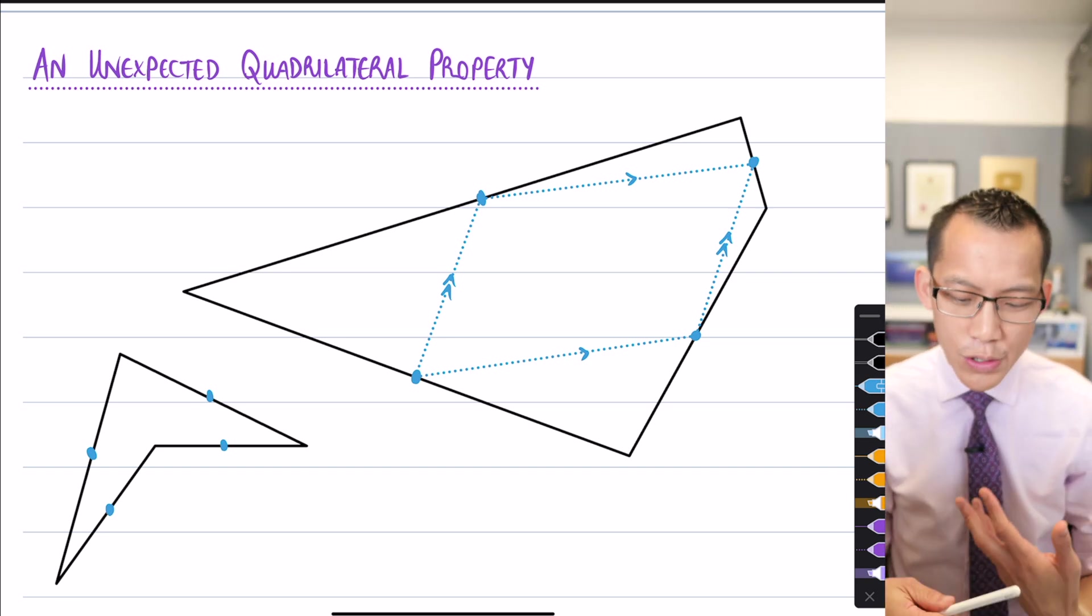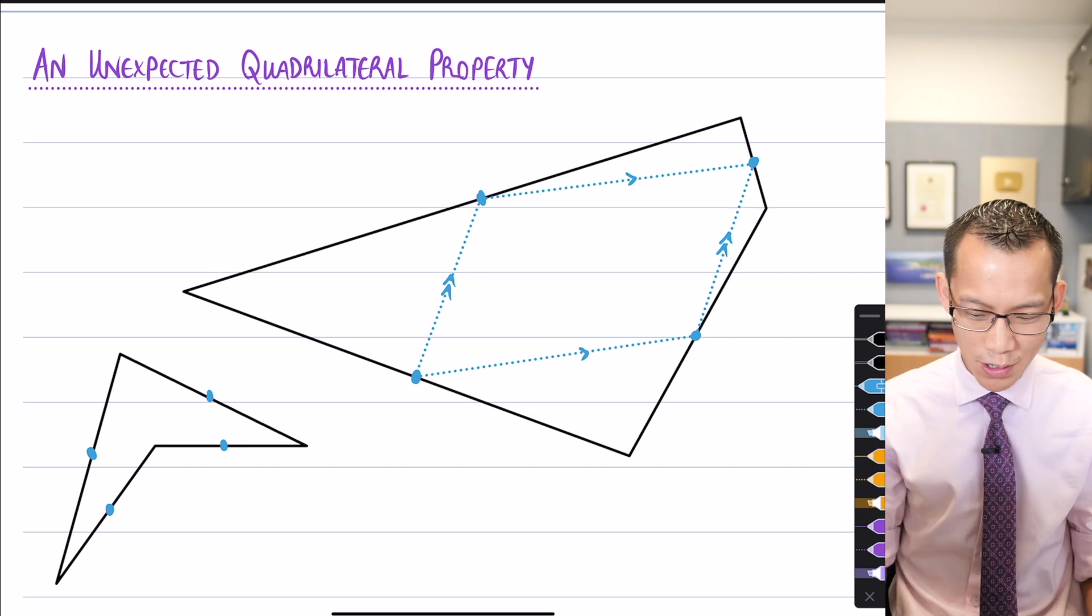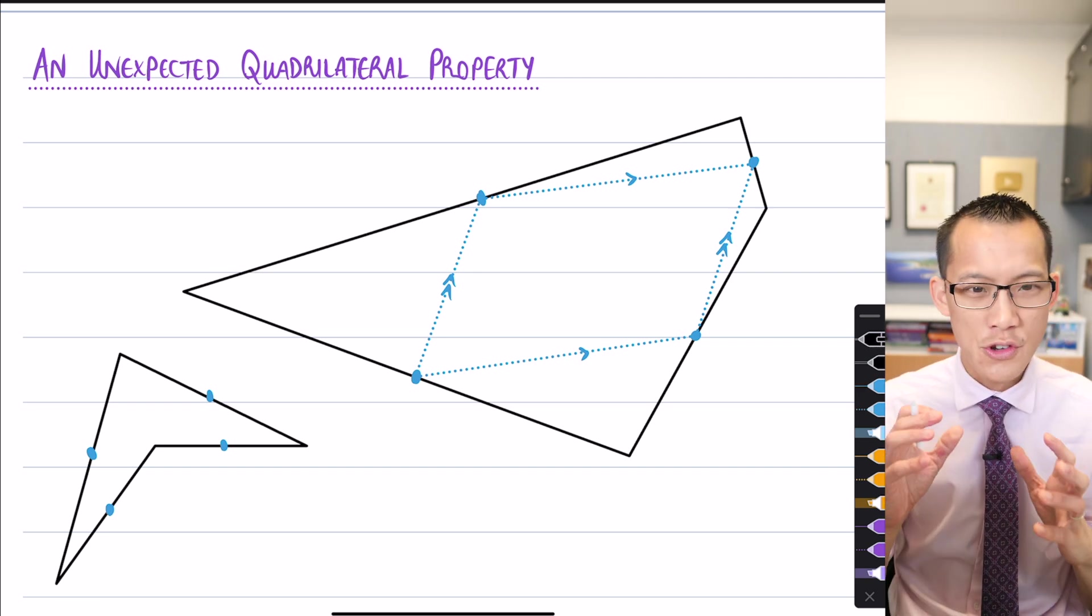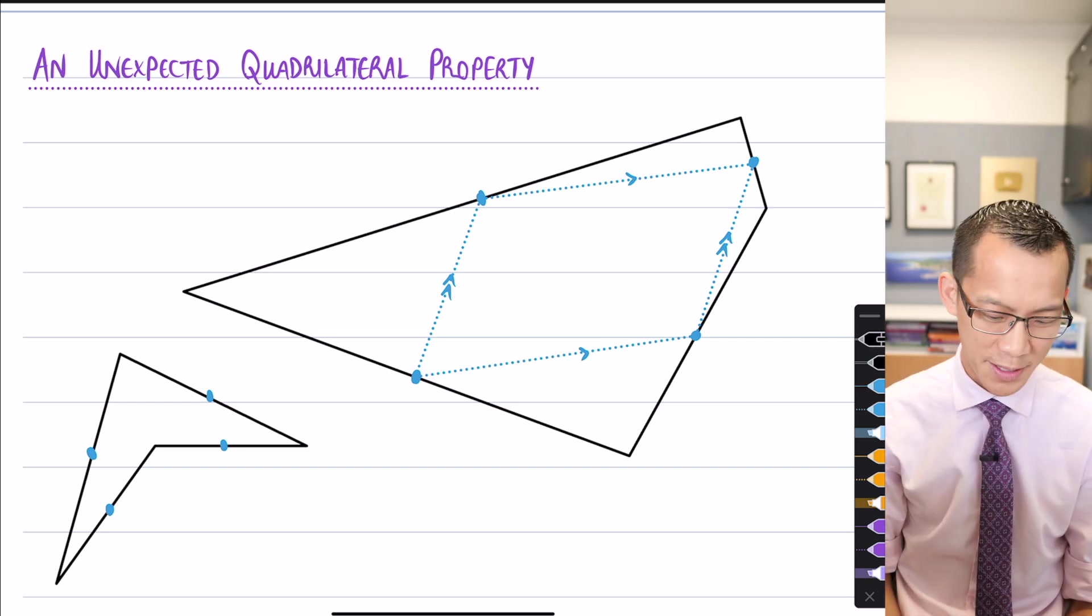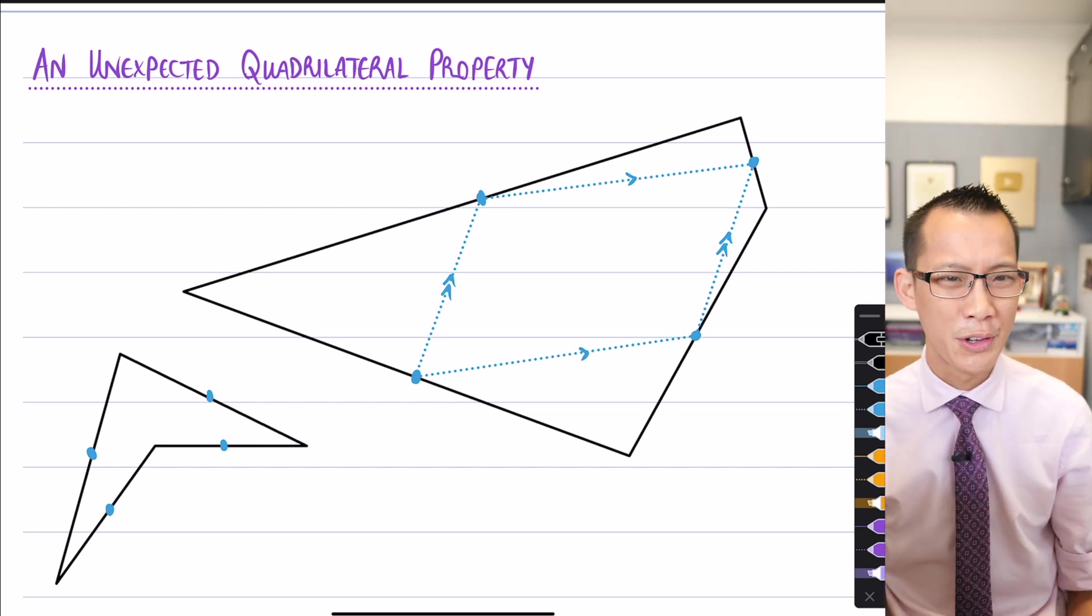So, how would you go about proving that if you draw any quadrilateral at all, you will always, when you join up the midpoints of the sides, you always end up with a parallelogram, it's kind of wild. Do you have any thoughts, what would you do?